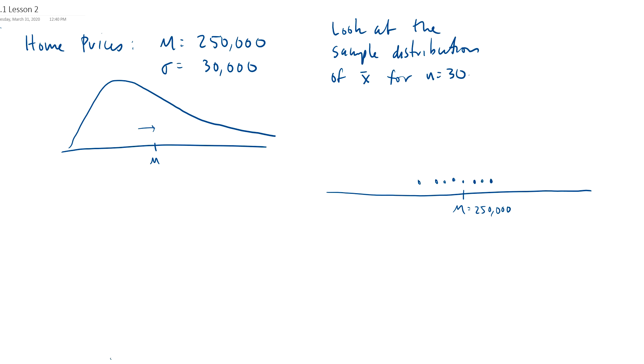These are, this is what we call the sample distribution of x-bar. Because these are samples. Sample averages. This data over here on this one, those are individual homes.